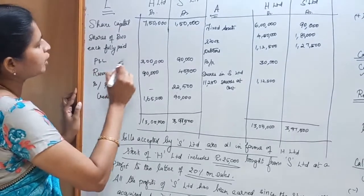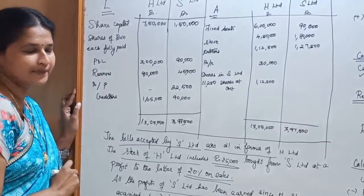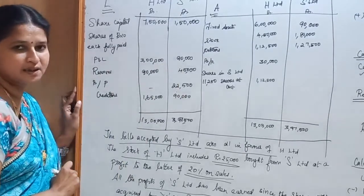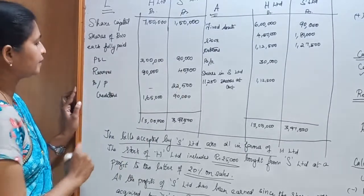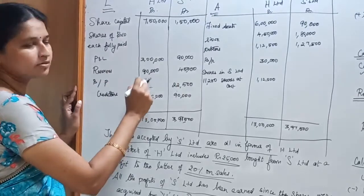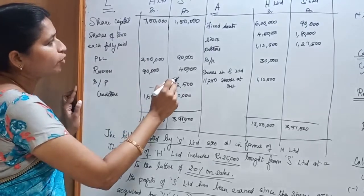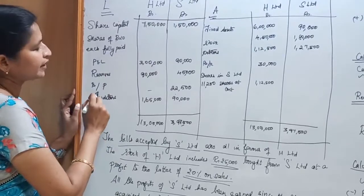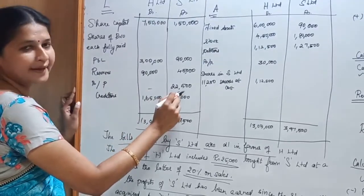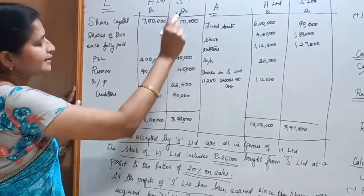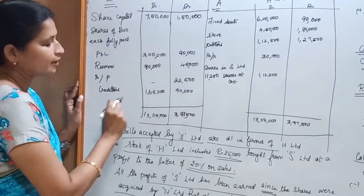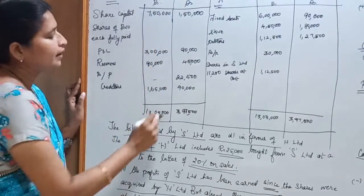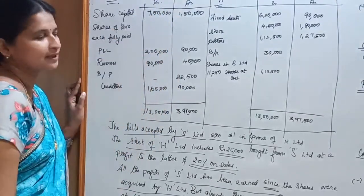Profit and loss account: H Limited is Rs.3,00,000 and S Limited is Rs.90,000. Reserves: Rs.90,000 in H Limited and Rs.45,000 in S Limited. Bills payable Rs.22,500 in S Limited. Creditors Rs.1,65,000 in H Limited and Rs.90,000 in S Limited.